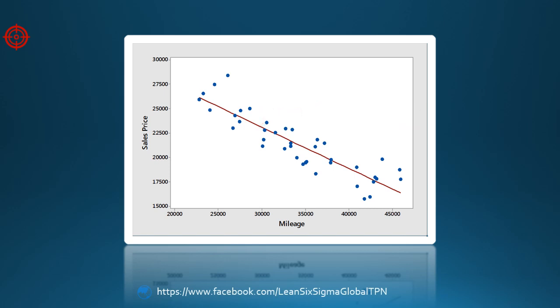To illustrate, recall the sales price and mileage data gathered by ABC. Here, the relationship between the variables is not perfectly linear. The points on the scatter plot do not fall exactly on the line.